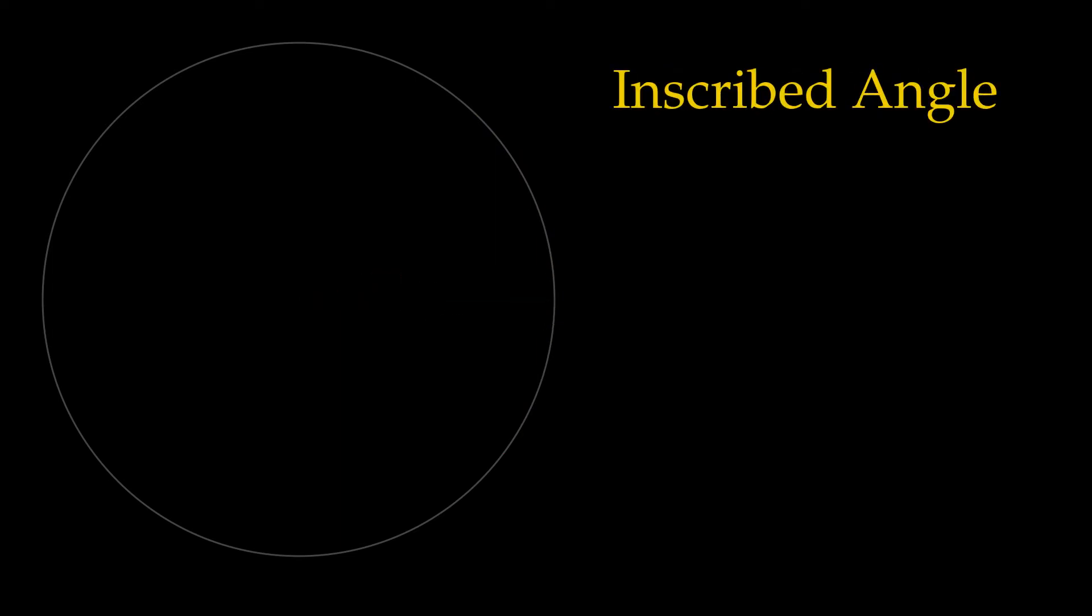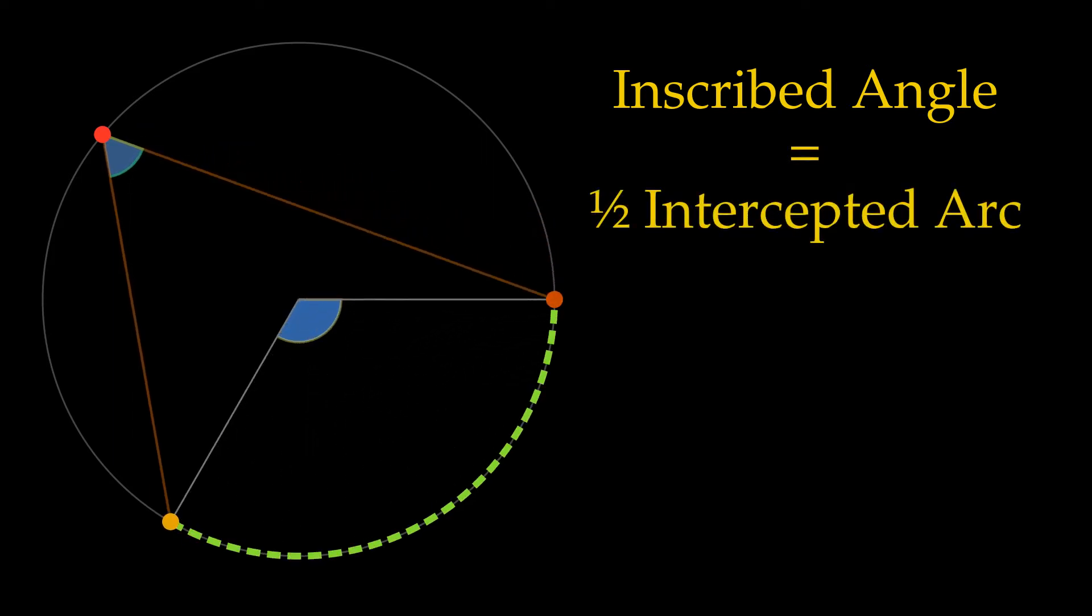An inscribed angle is an angle that has its vertex on the circle, and the rays of the angle are chords of the circle. The measure of an inscribed angle is equal to one-half the measure of its intercepted arc.